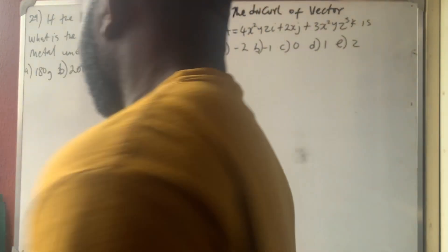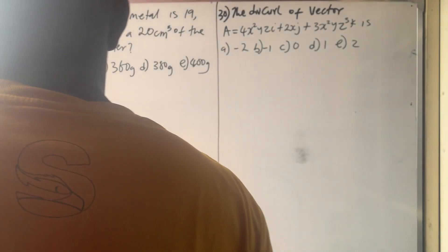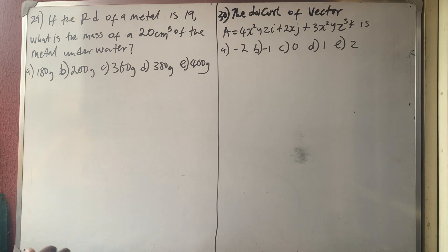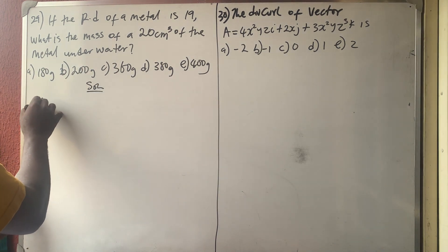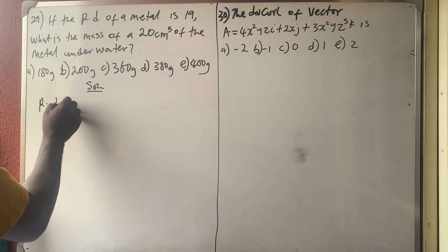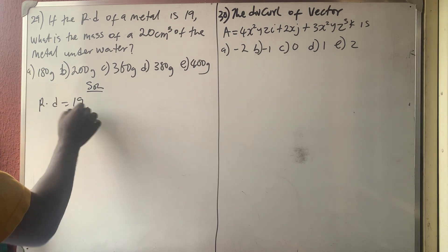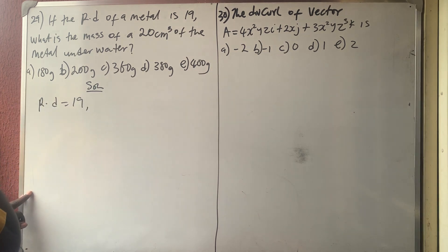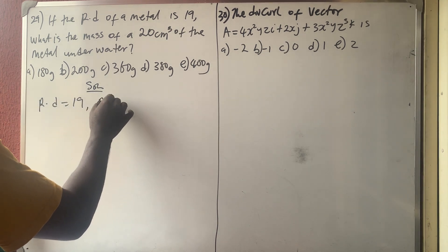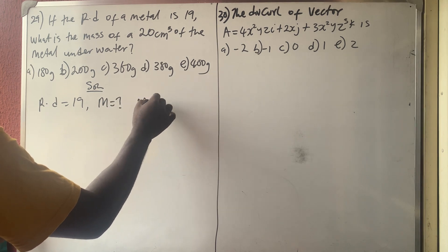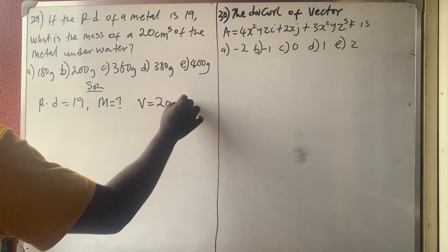Let's continue from where we stopped. If the relative density of a metal is 19, what is the mass when the volume underwater is 20 cm cubed?